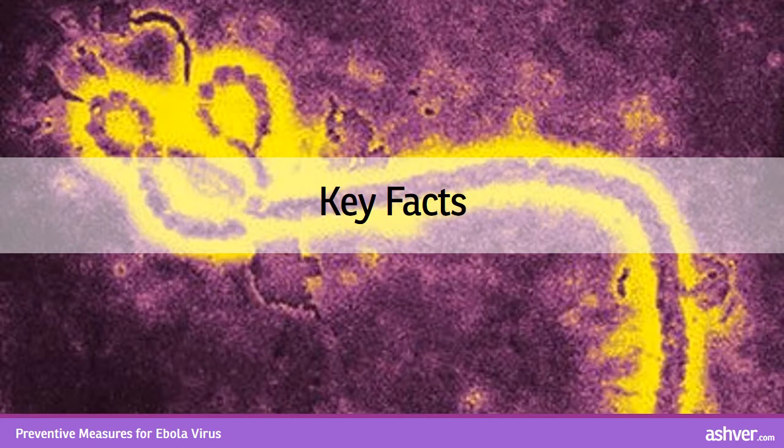Avoid areas of known outbreak. Find out about current epidemics by checking the CDC website. Wash your hands frequently with soap and water or an alcohol-based hand rub containing at least 60% alcohol, to avoid contracting infections of any sort.